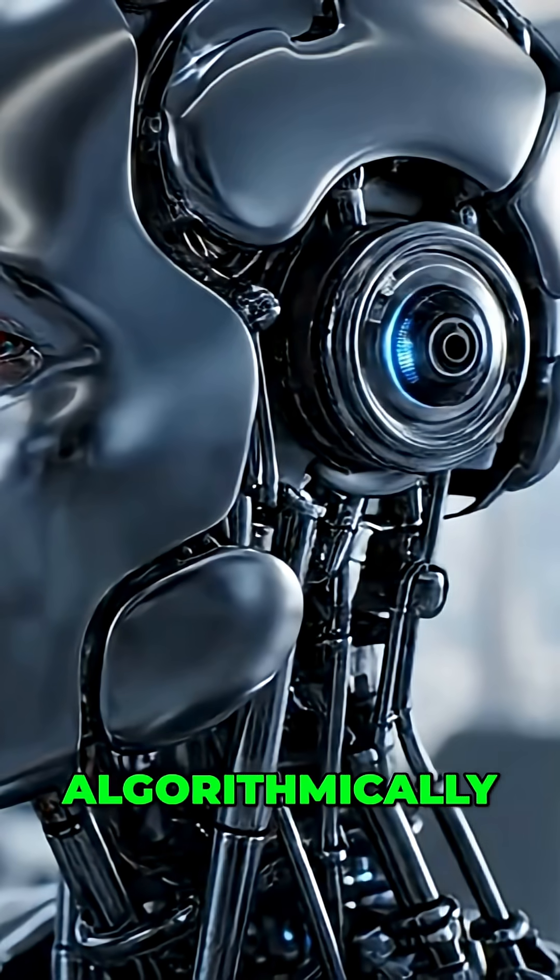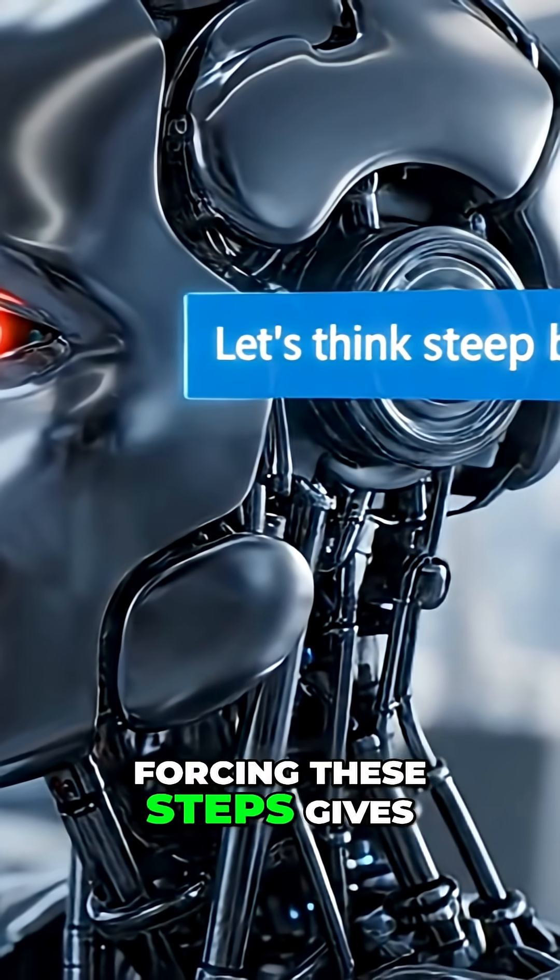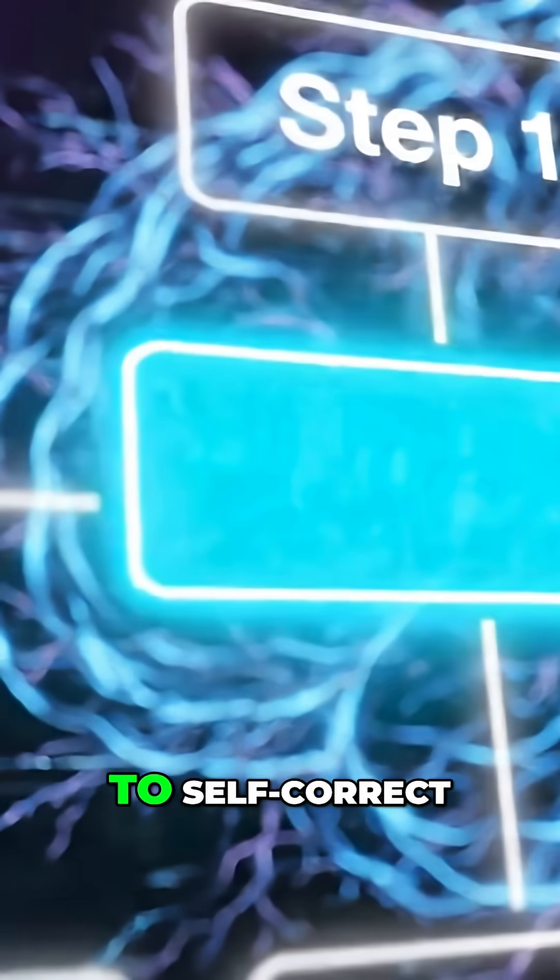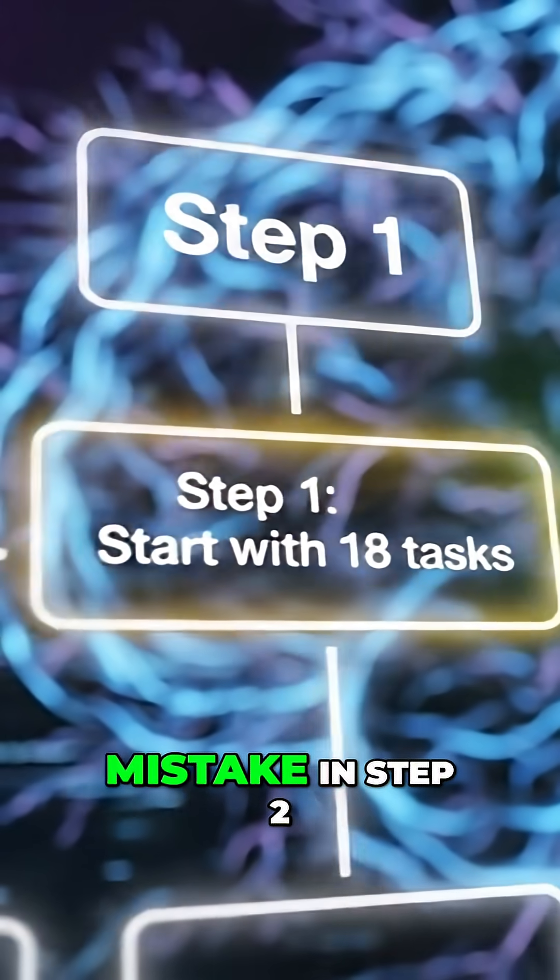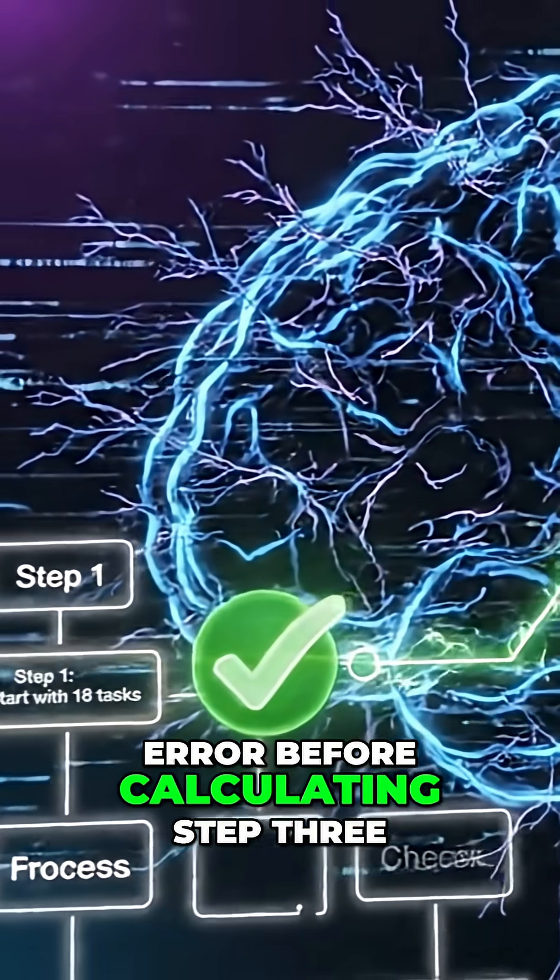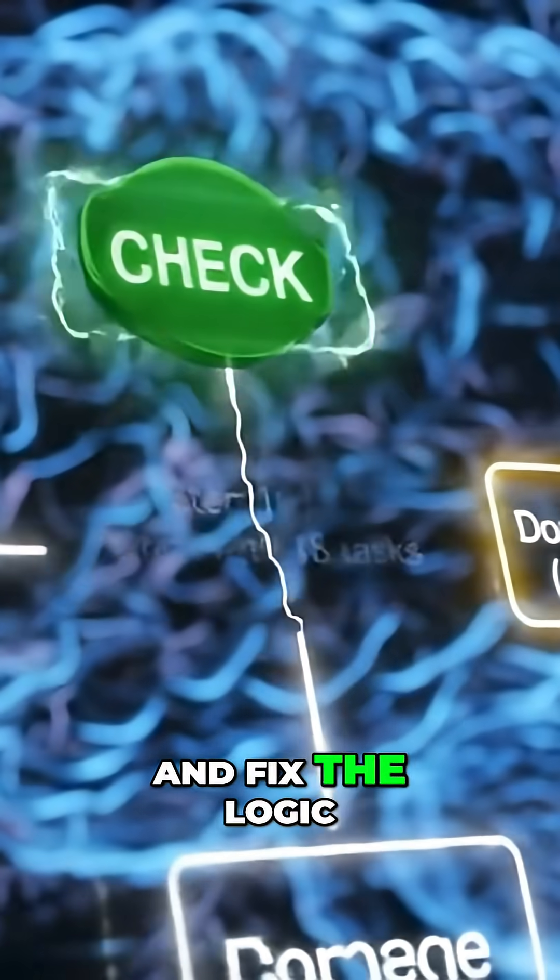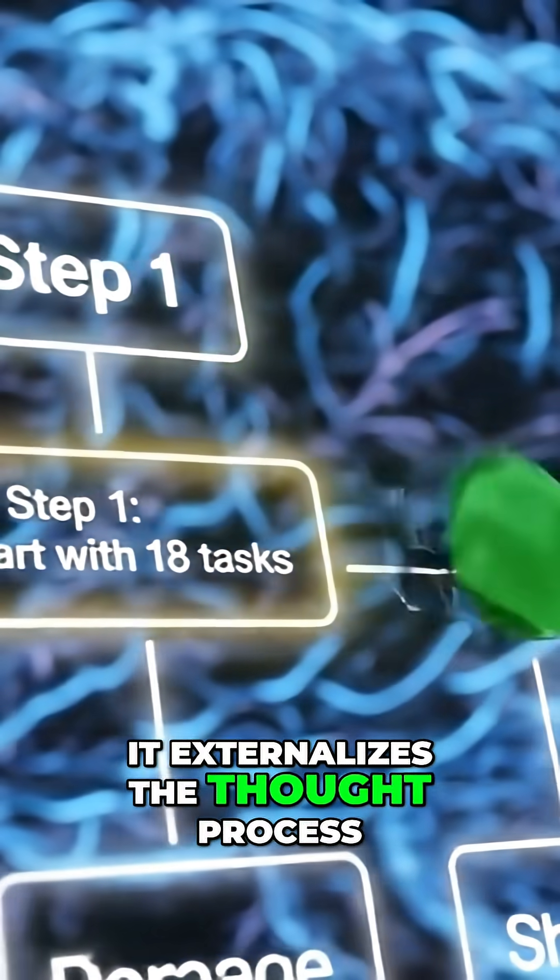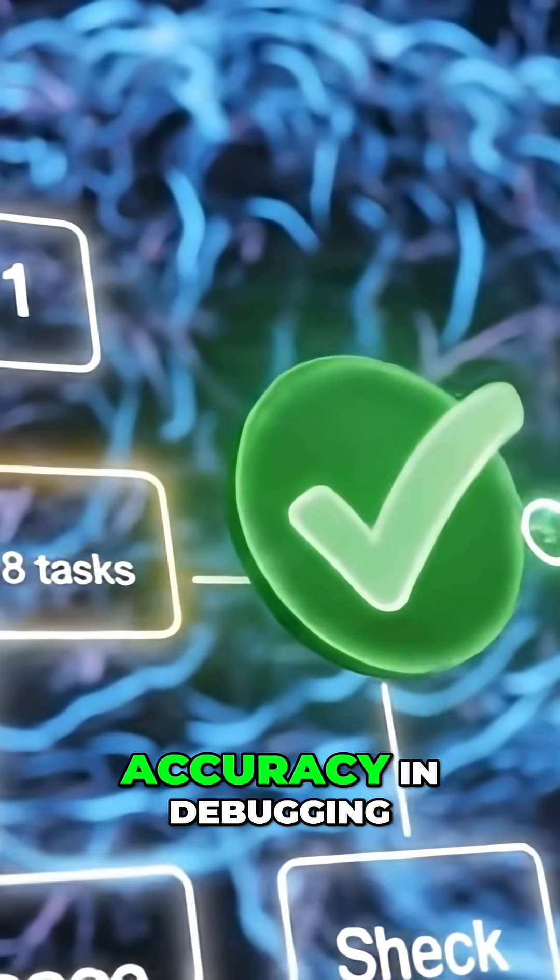So why does this work so well? Algorithmically, forcing these steps gives the model multiple opportunities to self-correct. If it had a mistake in step two, it would see the error before calculating step three and fix the logic. It externalizes the thought process, which is key to accuracy and debug.